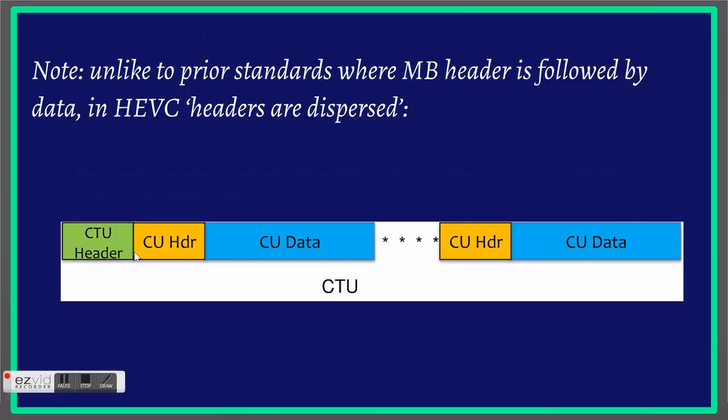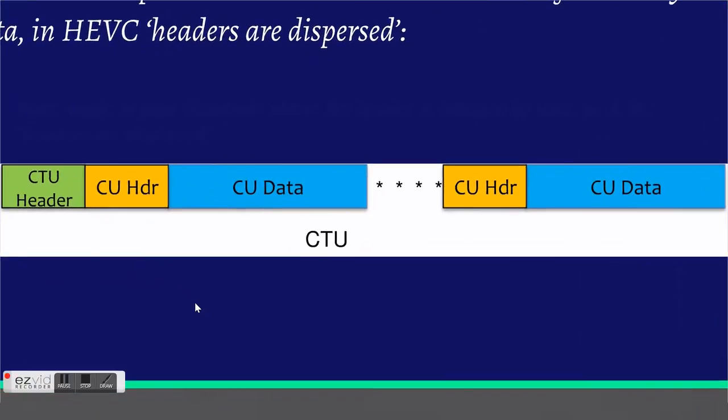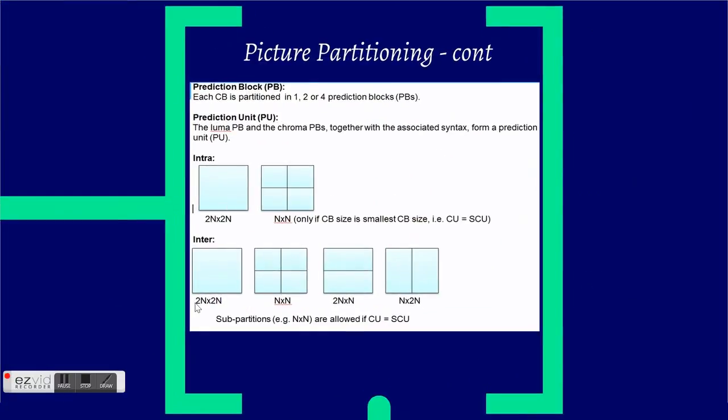Now unlike the H.264 it was MB header followed by the data. Now the CTU header, CU header and then CU data. Then every code block is like independent block which actually precedes of CTU header.